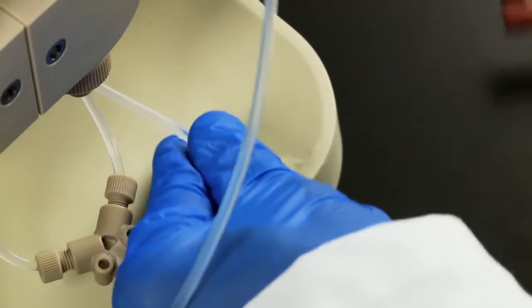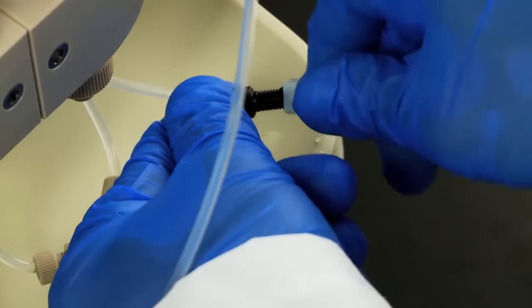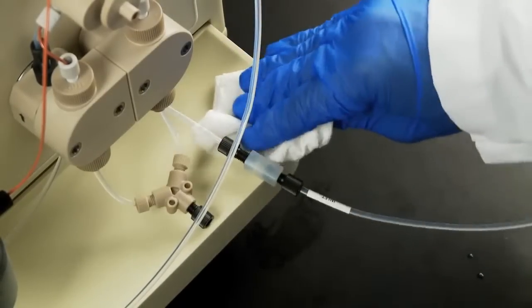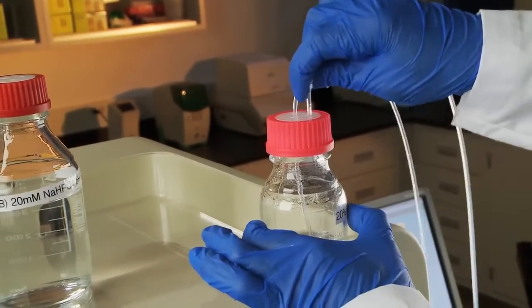Detach the syringe and the adapter from the priming line and attach the outlet line with the union. Clean up any storage alcohol that may have spilled during priming. Place the end of the outlet line into the pump head wash reservoir.